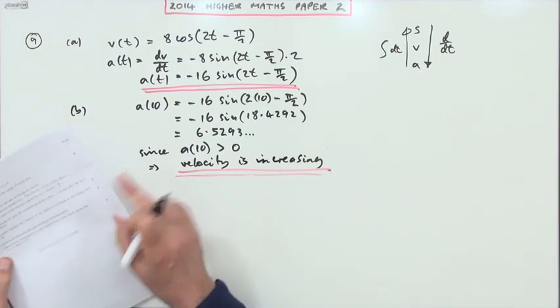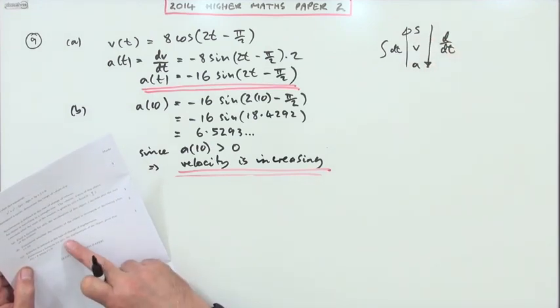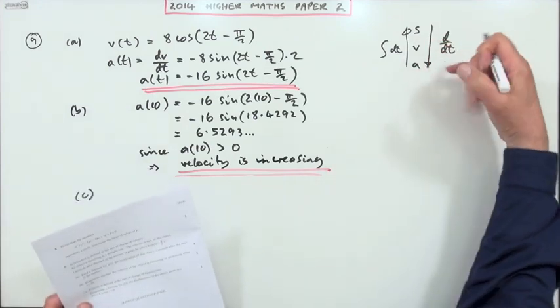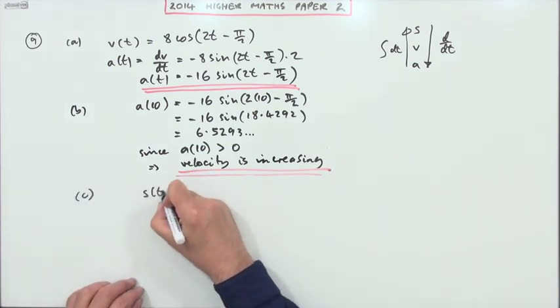Part C, then. Velocity is defined as the rate of change of displacement. There we go there. Determine the formula for the displacement. Well, that'll just mean we have to reverse that. We're going to integrate.